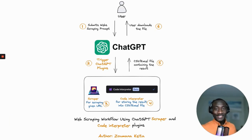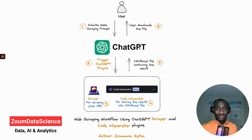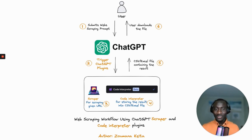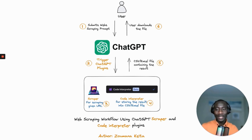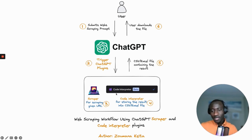If you want to scrape data from the internet and do not have any programming skill set, this is the ultimate workflow that will help you do that. As a user, you'll be able to submit your web scraping prompts containing the URL of the website to scrape and some descriptions to help the model identify which part of the website to collect. Once that is done, ChatGPT will trigger the relevant plugins — mainly the Scraper and the Code Interpreter.